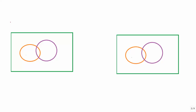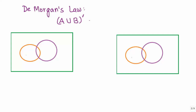In this video, let us try to demystify De Morgan's Law. We'll look at both laws, starting with the first law. The first law says that the complement of the union of two sets is equal to the intersection of the individual complements. To prove it, we'll take the left-hand side, perform the operation using a Venn diagram, then do the right-hand side, and see if we get the same result — getting an intuitive feeling of why this law works.